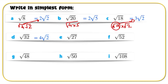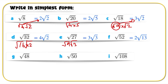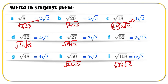Root 32 gives 4 root 2 — remember, that's root 16 times root 2. The next one is 3 root 3, which can be written as root 9 over root 3. Then 2 root 13. Continuing: root 48 gives 4 root 3. Root 50 becomes 5 root 2 because it's root 25 times root 2. And the final one, root 108, can be written as 6 root 3, which is root 36 times root 3.